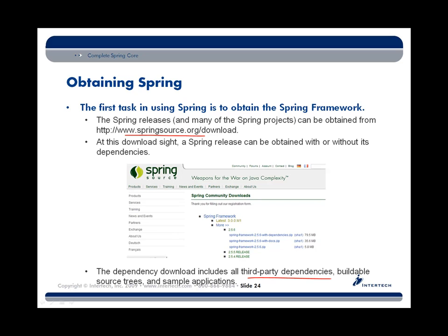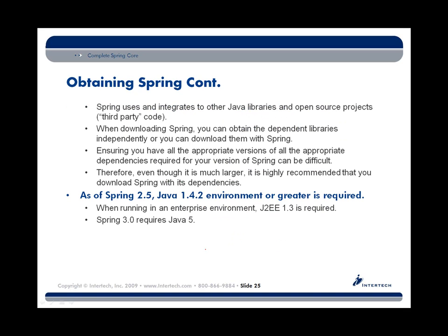For example, there's a way to use and integrate log4j with the Spring Framework. When you go to the download site, look for the dependency downloads. These include all those third-party JAR files and releases you're going to need as part of your Spring environment — not only the Spring libraries, but also all the open source Java libraries you need to actually run your Spring environment.